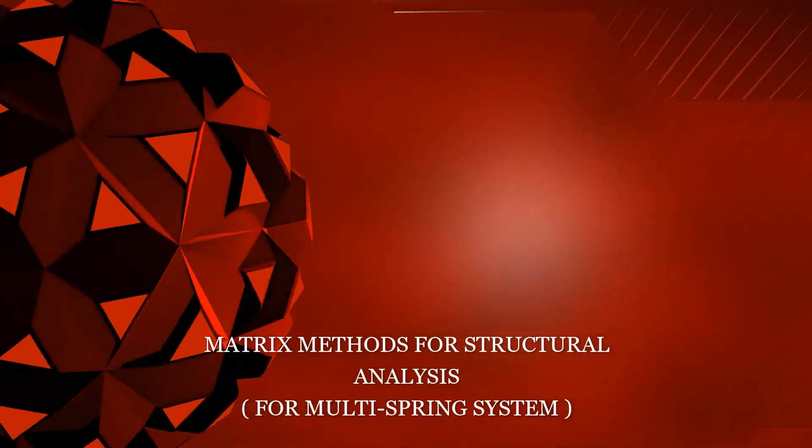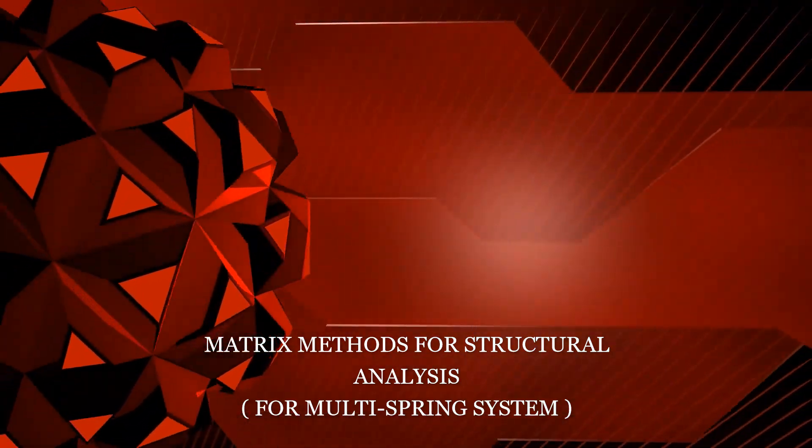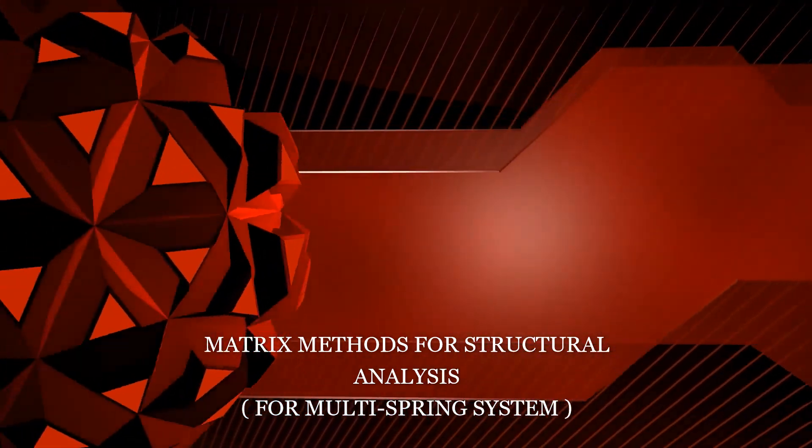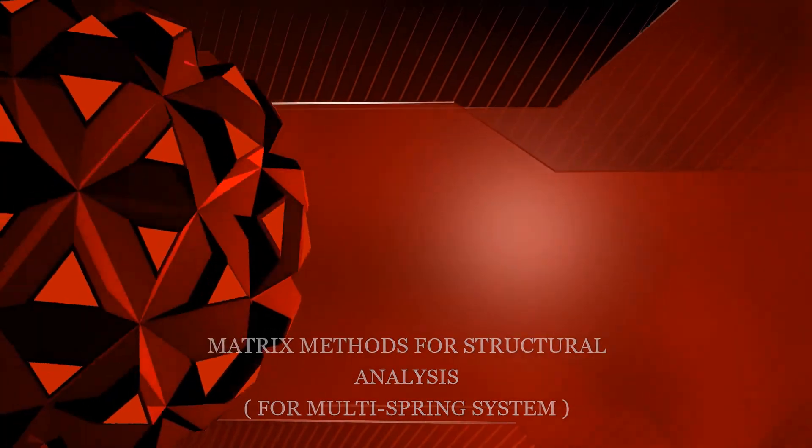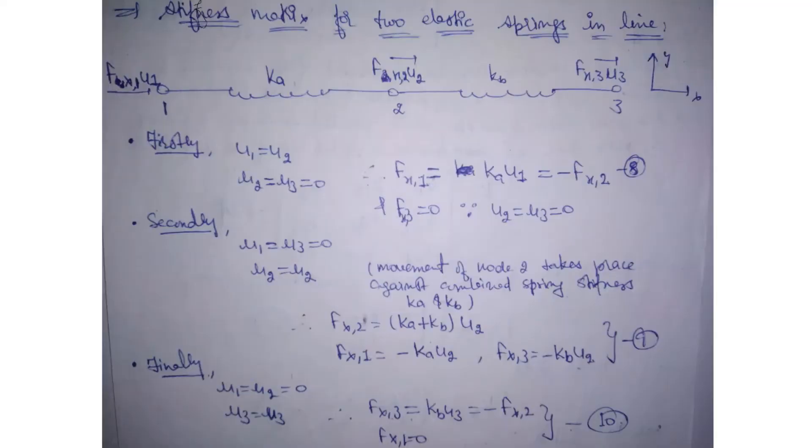Hello, welcome back to STEM Solutions. Today we are going to learn about structural analysis using stiffness method to calculate the stiffness of multiple spring systems. So let's start with the stiffness matrix for two elastic springs in line. Here we have two springs with one stiffness Ka and the other stiffness Kb.